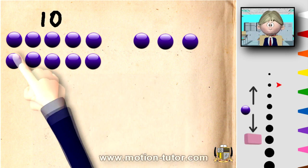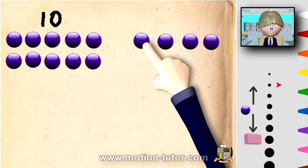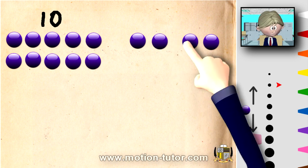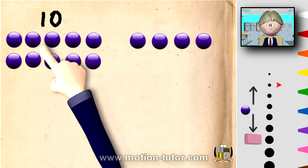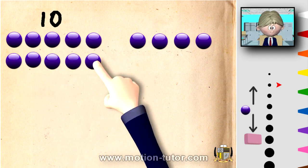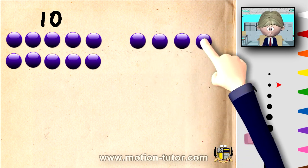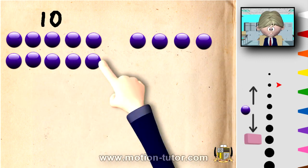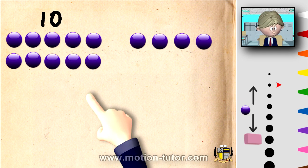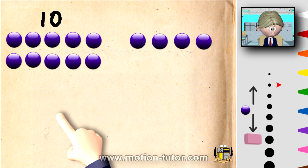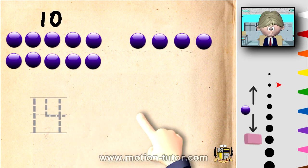So let's look at ten and four more. What would be ten and four more? Let's count. One, two, three, four, five, six, seven, eight, nine, ten, eleven, twelve, thirteen, and fourteen. So ten and four more is fourteen. And the number fourteen looks like this. And how it's spelled looks like this.